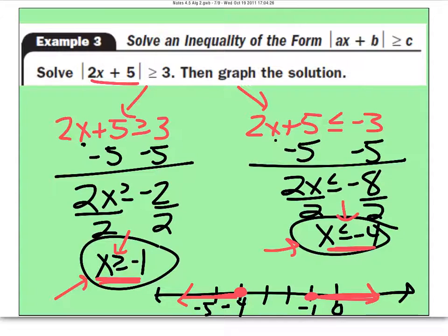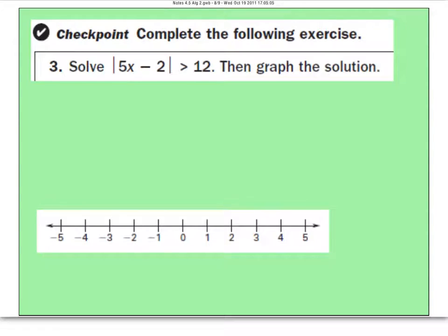So when you graph an absolute value inequality that has a greater than or greater than or equal to, this time, every single graph, you will see the two lines go in opposing directions. These are called rays. This type will never come together to make one line segment. Let's look at one more.